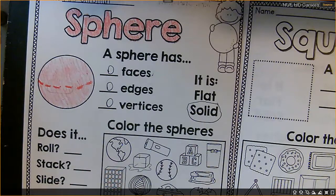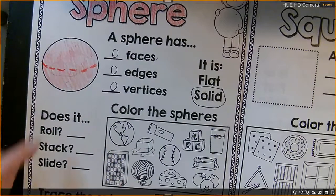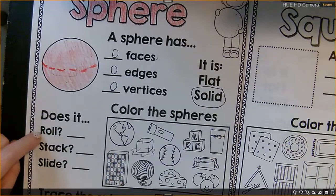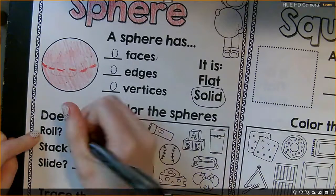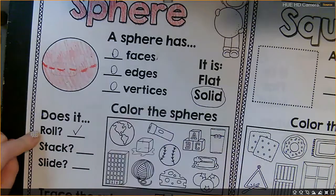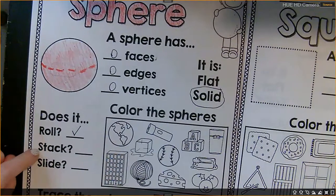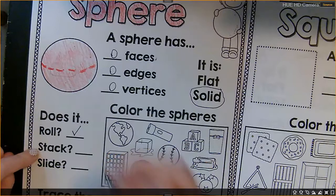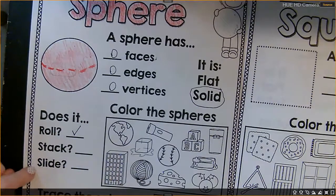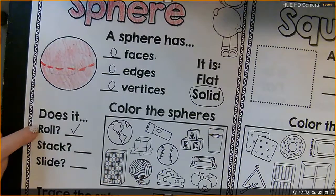Now let's talk about this right here. Does it roll? A sphere does roll. It's like a ball. So yes, it does. So we're going to put a little check mark there because it does do that. Does it stack? No, we cannot stack a sphere on top of each other because they would just topple over. So I'm just going to leave that blank. And does it slide? No, it does not slide. The only thing a sphere does is it rolls.